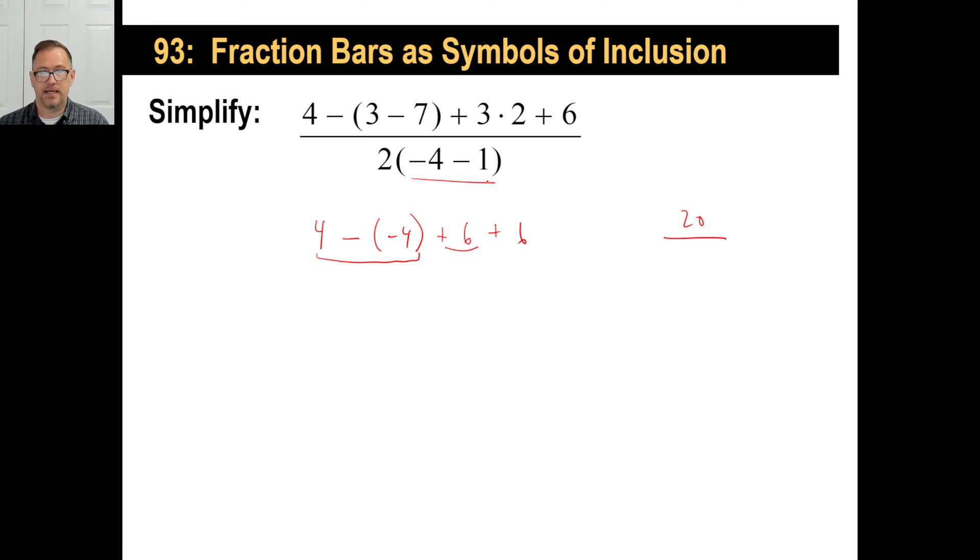Now the denominator. Negative four minus one is negative five. So we have two times negative five. Well, two times negative five is negative 10. And you should know like that by now, 20 positive divided by negative 10 will be negative two. That's it.